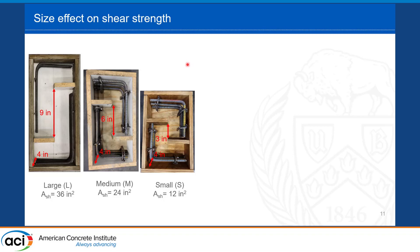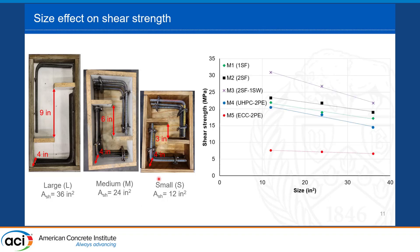To examine size effects, we fabricated specimens with similar dimensions but shear region depths of 9, 6, and 3 inches, giving shear plane areas of 36, 24, and 12 square inches respectively. Testing showed that all four UHPC materials exhibited higher shear strength at smaller sizes, while ECC showed only a very slight increase in shear strength with smaller size.